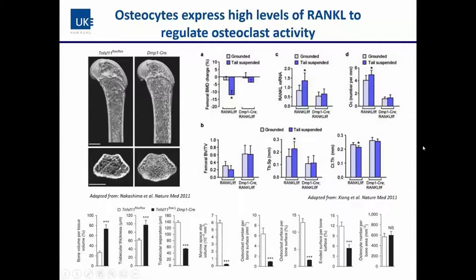The other group reported on tail suspension — hind-limb unloading — showing that while normally there is loss in bone mineral density with tail suspension, in the DMP1-Cre mice this loss compared to baseline was less pronounced and not significant. Other parameters examined included osteoclast numbers and cortical thickness, which was reduced in wild-type controls but not significantly reduced in the DMP1-Cre mice.